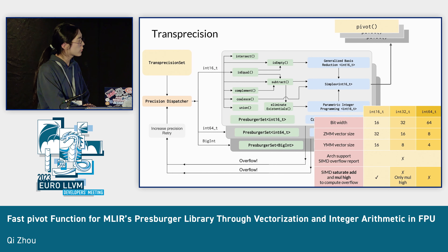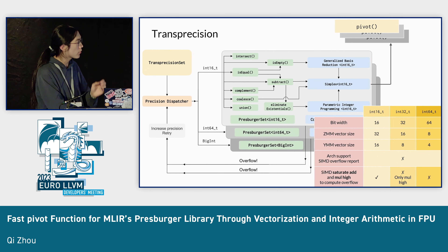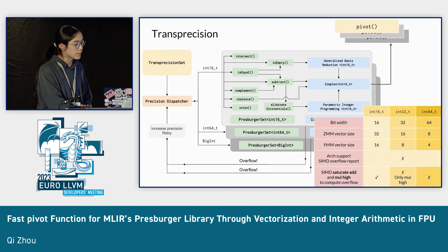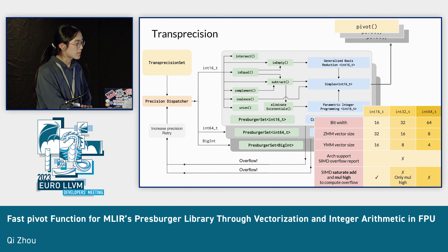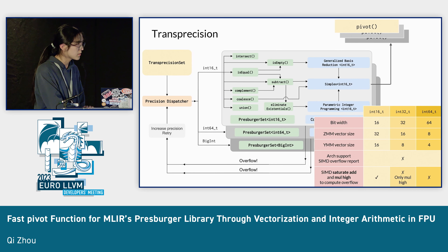The dispatcher changes the algorithm to INT64 or BIGINT accordingly. However, in MLIR upstream there are only two layers of transposition from INT64 to BIGINT. This is because INT16 requires AVX-512, which is not a popular ISA. Another problem is that either INT32 or INT64 is orders of magnitude slower than INT16 because, as mentioned, it cannot be vectorized — and the pivot operation requires overflow checking, but there are no vectorized overflow checking instructions to support INT64 and INT32.